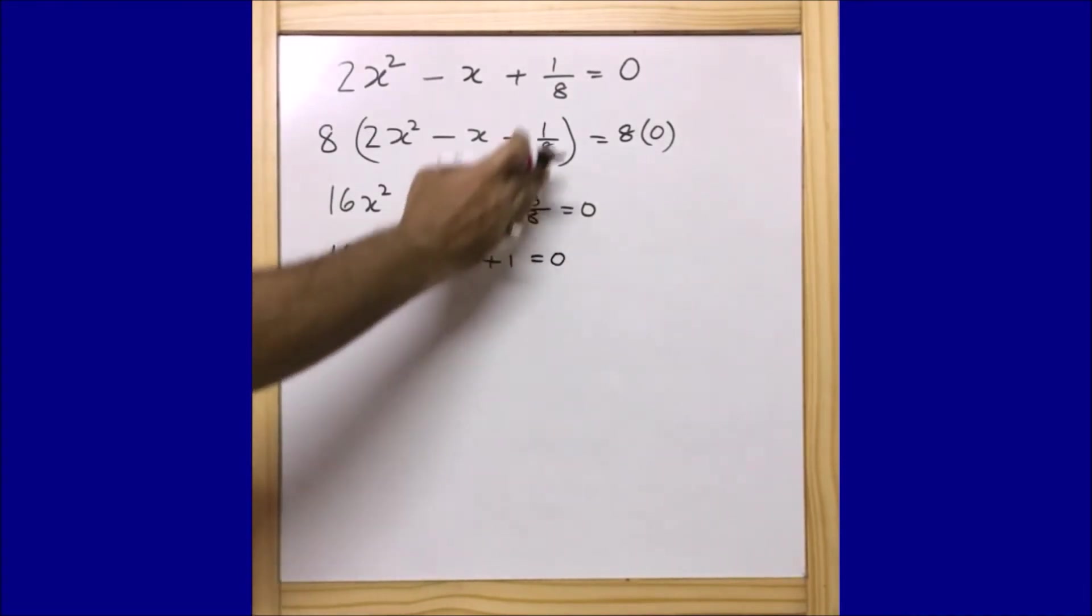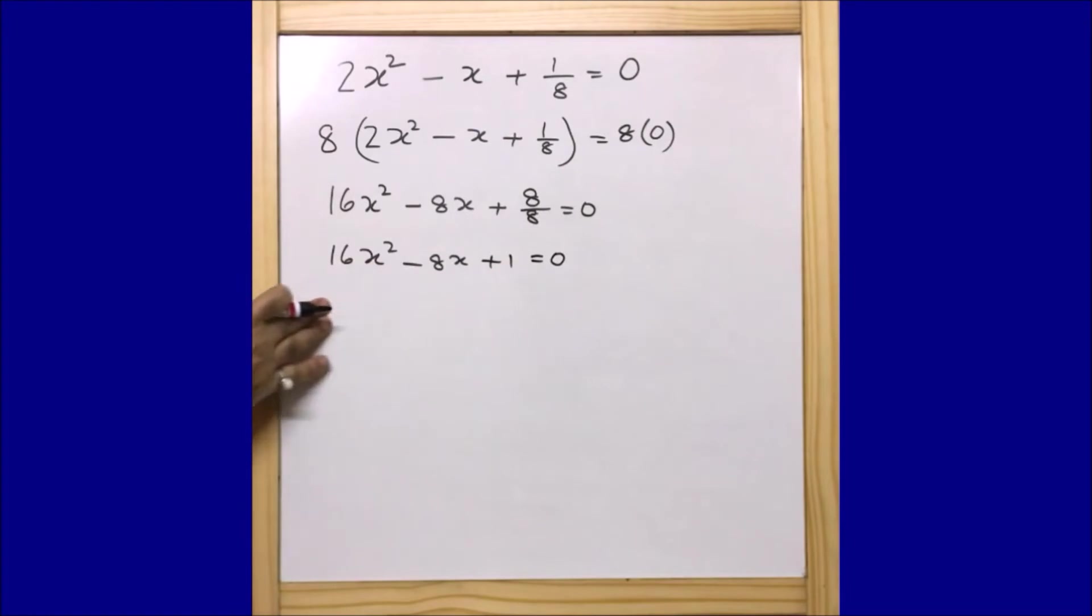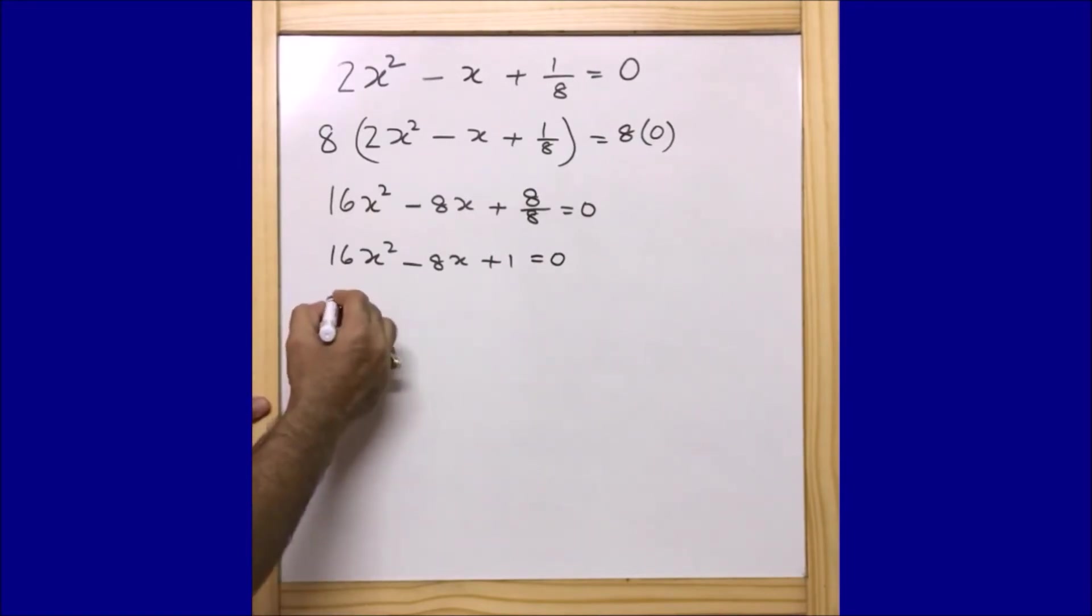Guys, now you can see we eliminated that 8 and we are able to find a simple and straightforward quadratic equation. Now as usual, let us factorize this and find the two values of x.